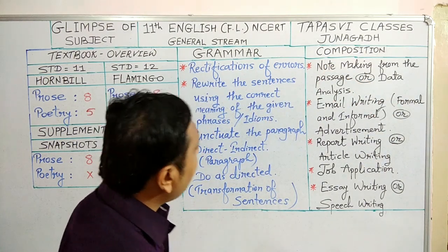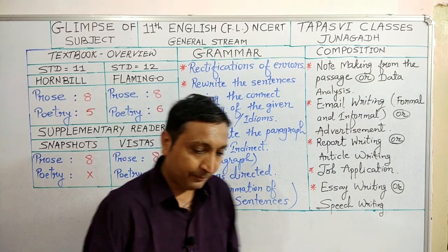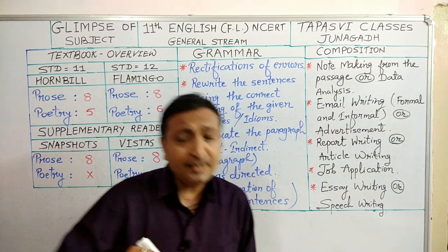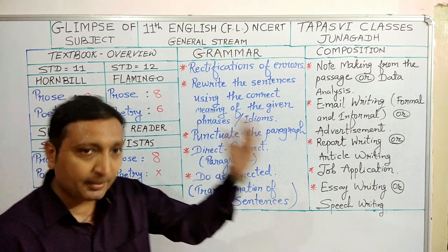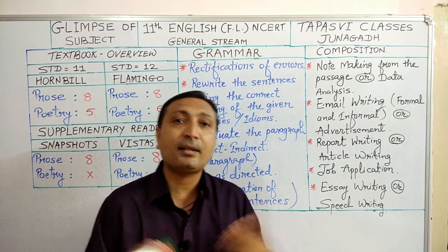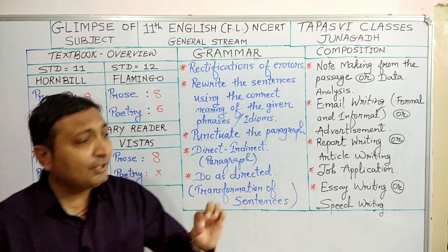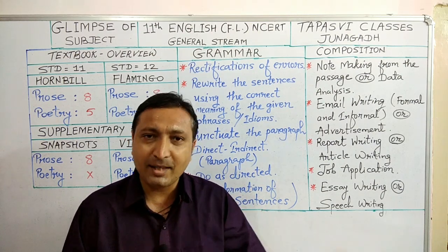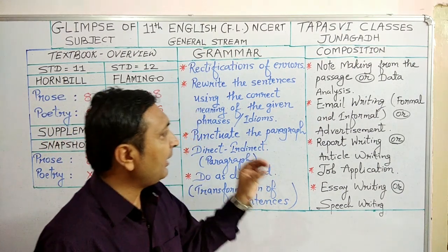Next point is email writing. We have two types of email writing: formal email writing and informal email writing. Formal email writing is the email which is written to either a company, industry, or any office, such as a municipality office — it is some complaint, request, or inquiry. This is called formal email writing. And in informal email writing, we write to relatives, family members, and friends with general topics — for invitation, thank you, suggestion, congratulation. This kind of email is included in informal.